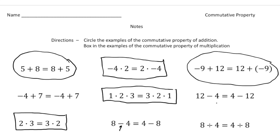12 minus 4 equals 4 minus 12 — the numbers did switch around, but we're dealing with subtraction, so this is neither one. And 8 divided by 4 equals 4 divided by 8 — the numbers switched, but we're talking about division, and there's no such thing as the commutative property of division, so we leave that blank. Now that you understand more about the commutative property, pause the video and try the other practice problems. When you're done, hit play and you can see how you did. Good luck.